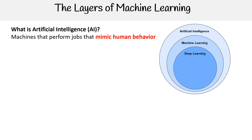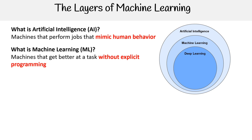Artificial intelligence, also known as AI, is when machines perform jobs that mimic human behavior. It doesn't describe how it does that, but that's what AI is. One layer underneath, we have machine learning — machines that get better at a task without explicit programming.